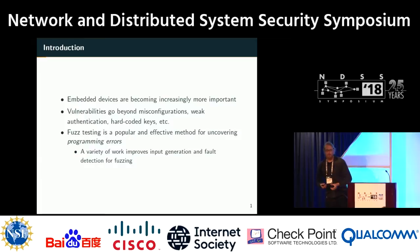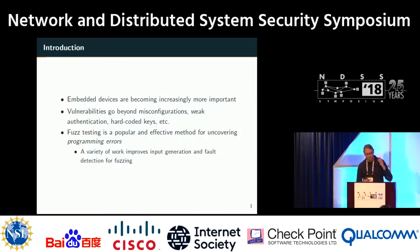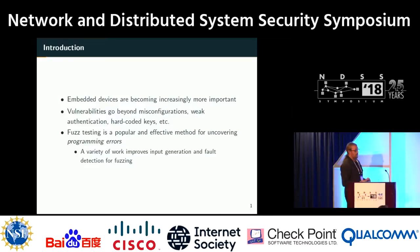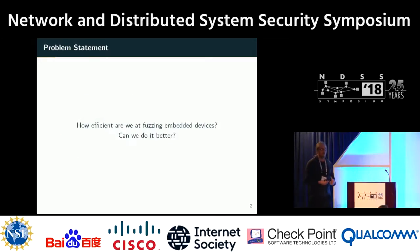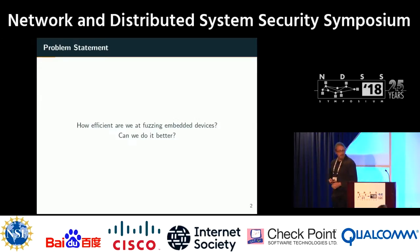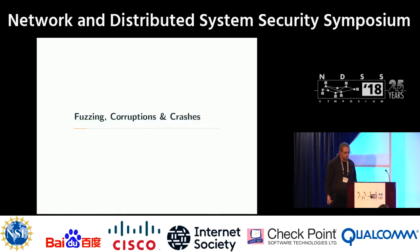A very popular method to discover those kinds of programming errors is fuzzing, and a lot of work is dedicated to input generation and fault detection for fuzzing on desktop systems. But if we go to the embedded world, the question is: are we really fuzzing embedded devices efficiently, and can we do it better?